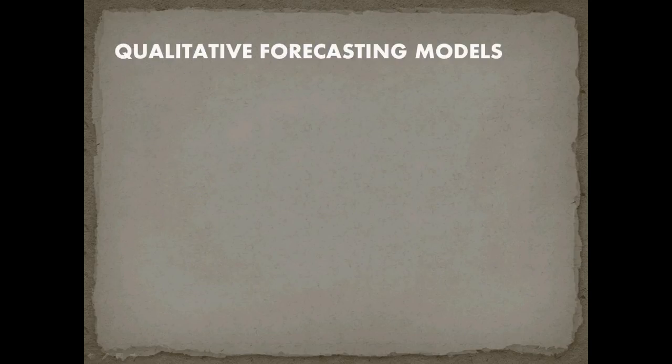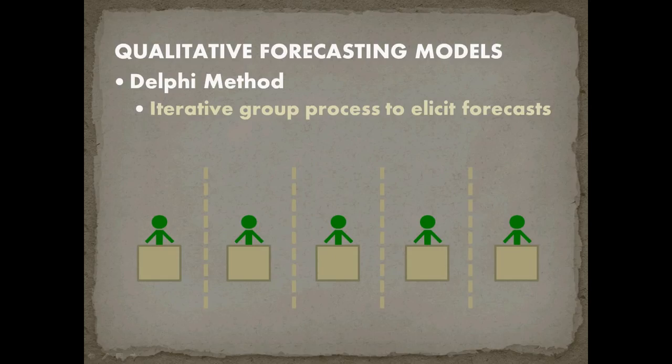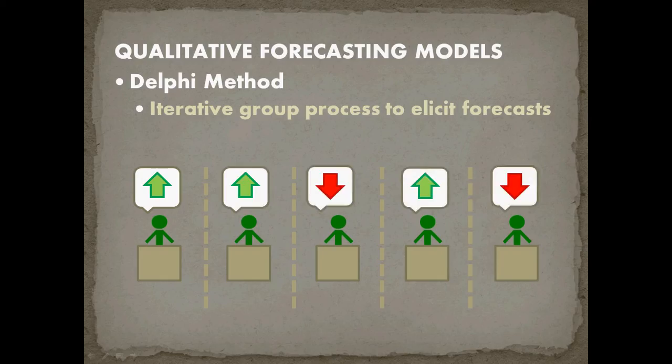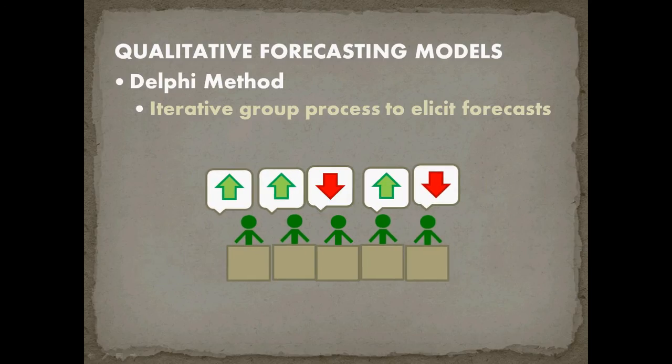So what are some qualitative forecasting models? The first qualitative forecasting method we're going to cover is the Delphi method and the Delphi method is an iterative group process to elicit forecasts. So let's say I get five experts and I want them to forecast what the economy is going to do. I keep them separate and I have each one of them make a forecast. Once they've made their forecast I bring them together and I have them discuss why they think the economy is going to go up or down and justify their forecast.